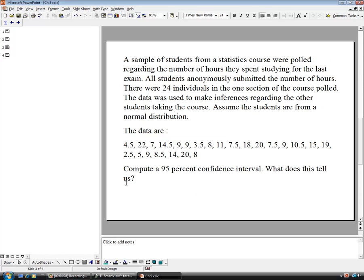The second one, a sample of students from a statistics course were polled regarding the number of hours they spent studying for the last exam. All students anonymously submitted the numbers of hours. There were 24 individuals in one section of the course polled. The data was used to make inferences regarding other students taking the course. We need to assume the students are from a normal distribution. These are the different data points as to the number of hours each student was studying. We need a 95% confidence interval. What does it tell us?